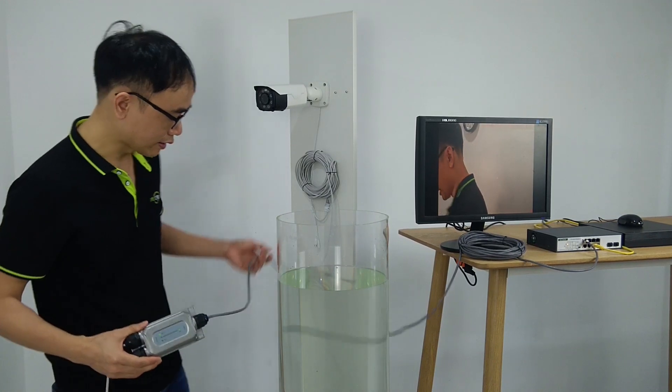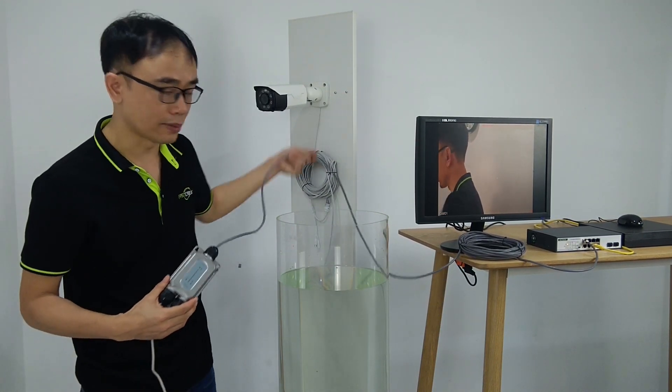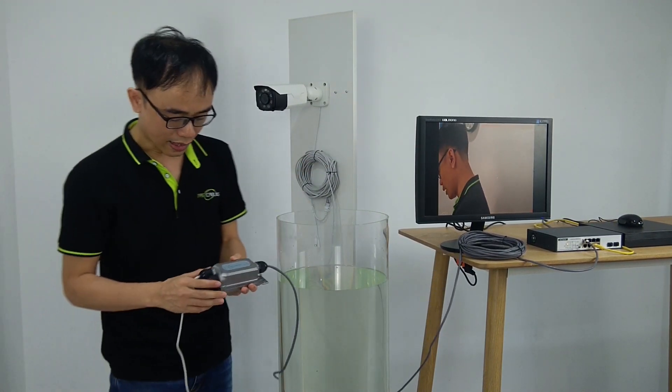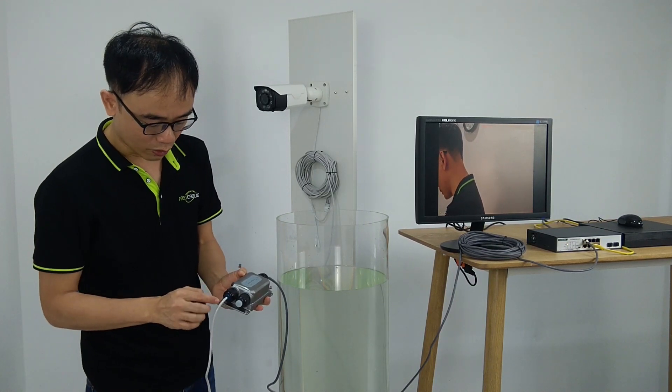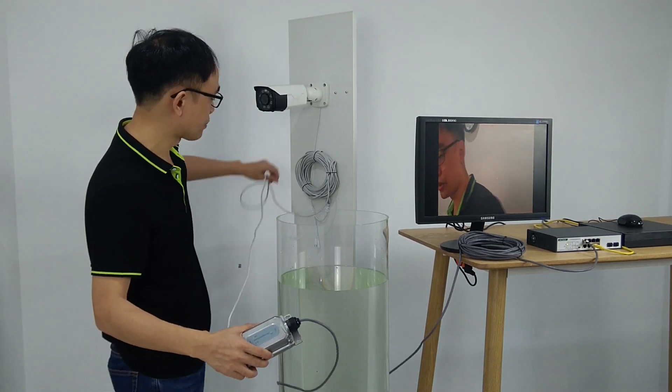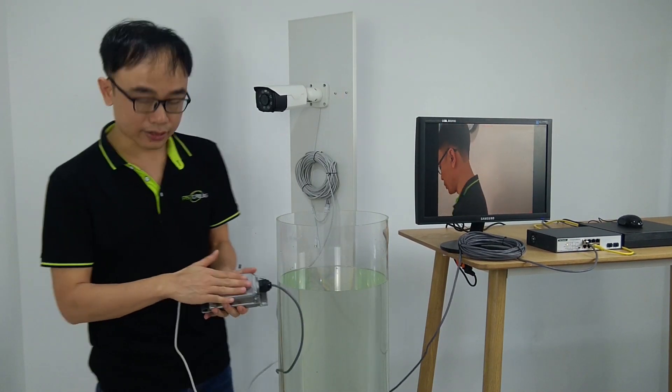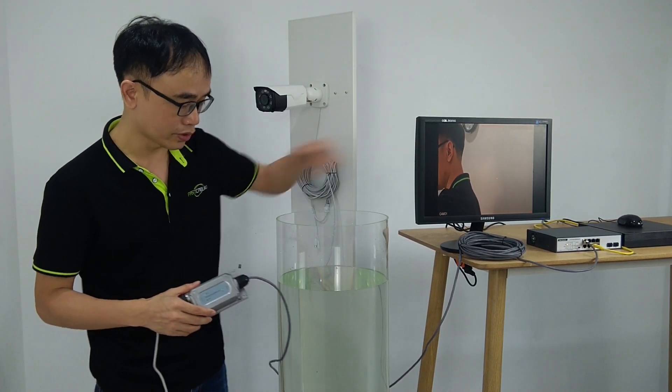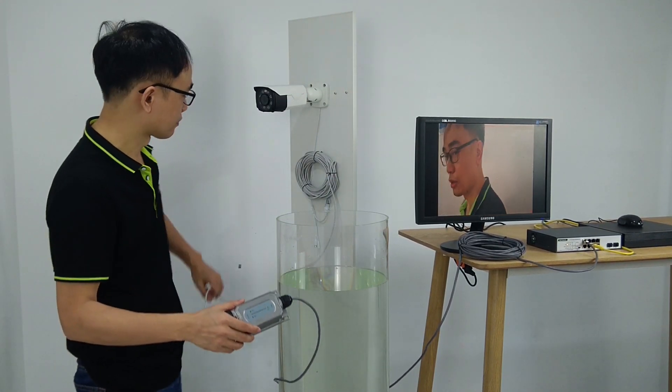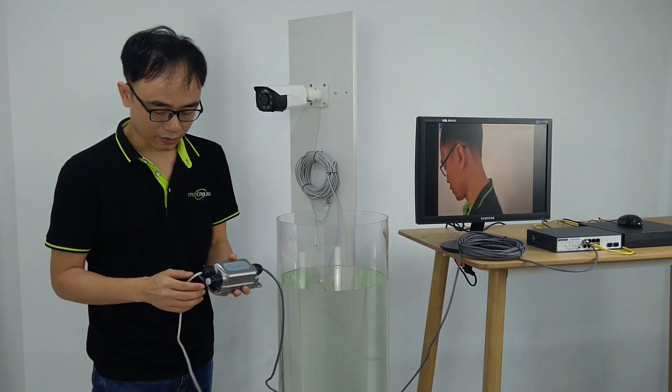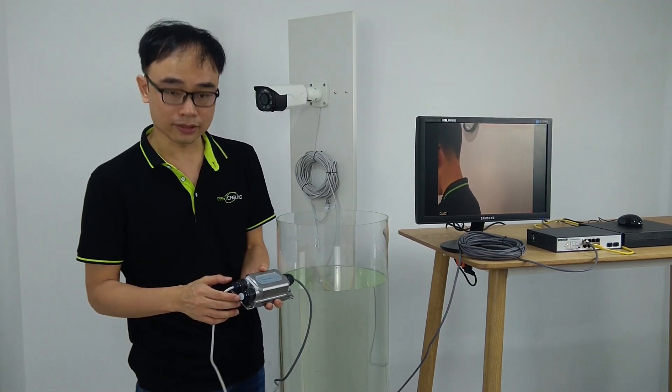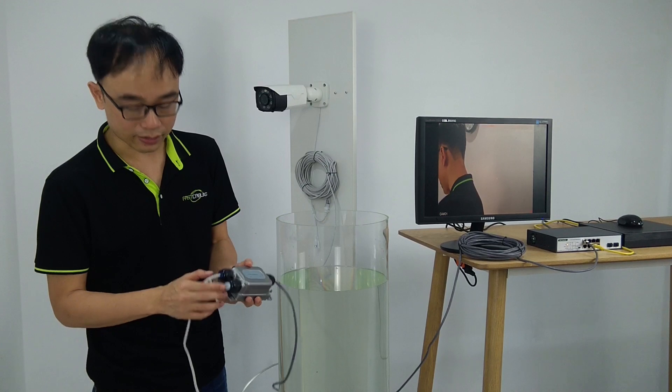The PoE input is connecting the cable from the PoE injector, the PoE switch. And we got two outputs. One is connecting to the PoE IP camera. So the PoE extender is getting the power and data from the PoE switch and repeating and sending to the PoE IP camera. We have a second port which we don't need, so there's a rubber plug to block it.